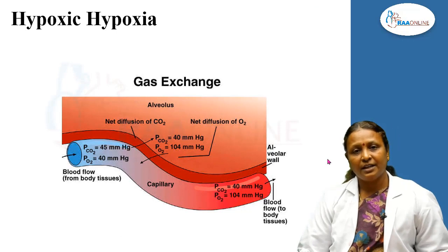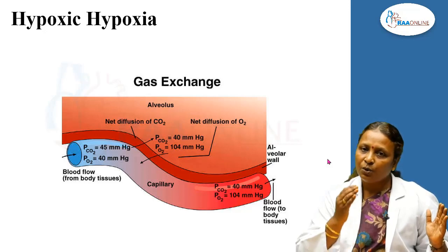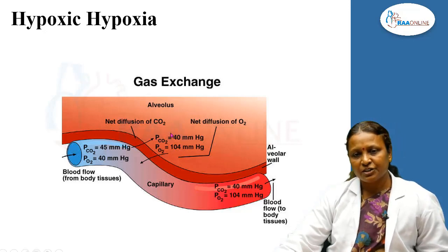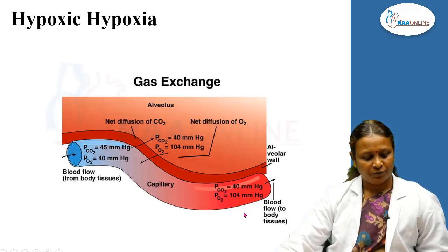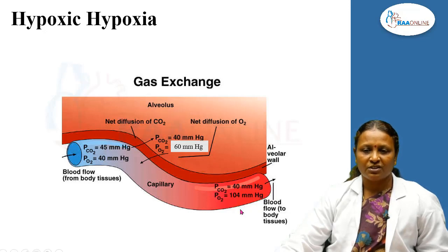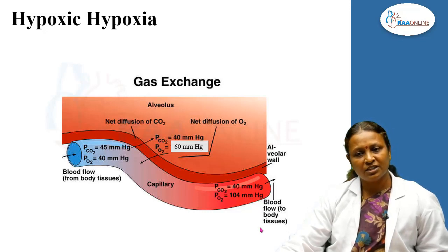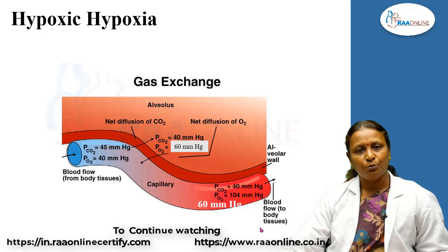Hypoxic hypoxia is the condition where tissue oxygen level decreases secondary to a fall in atmospheric oxygen or something wrong with the ventilatory mechanisms. At sea level, the partial pressure of oxygen in the alveoli is 104 mmHg, oxygenation occurs normally, and the blood leaving the pulmonary capillary has a PO2 of 104 mmHg. When you move to high altitude, the partial pressure of oxygen decreases, and the pulmonary vein carries oxygenated blood with a PO2 of around 60 mmHg only.